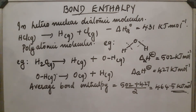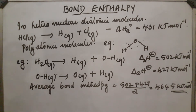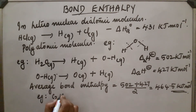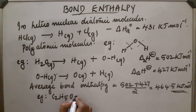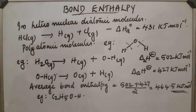We have to take the average of these two bond enthalpies. Another example is C2H5OH, and in this case also we have to take the average bond enthalpy.